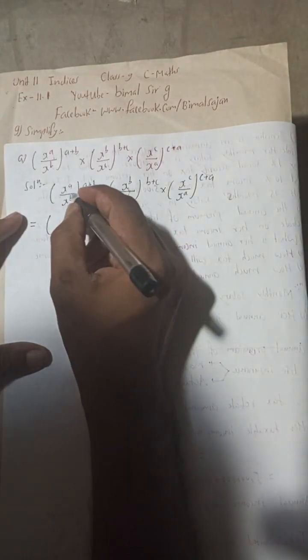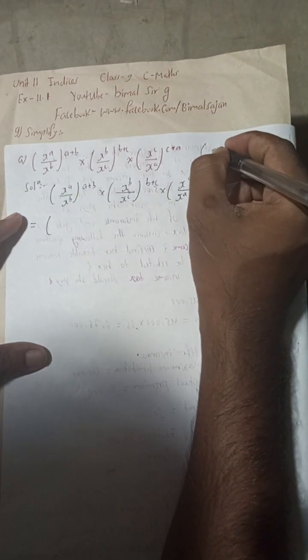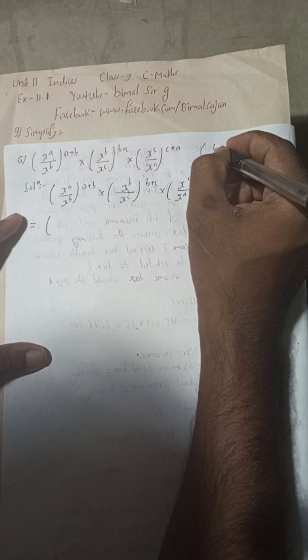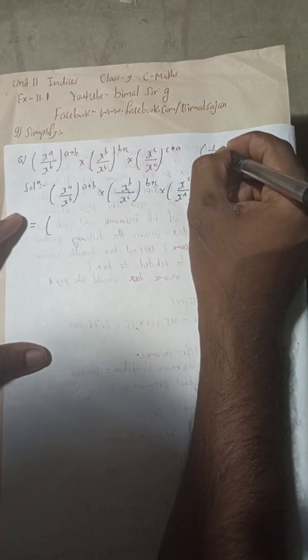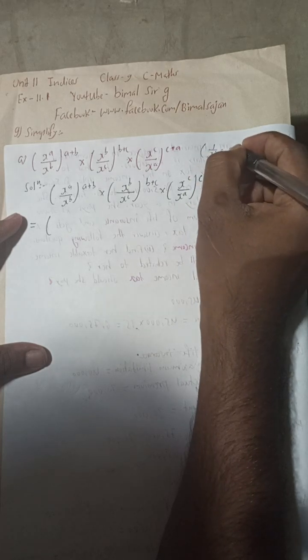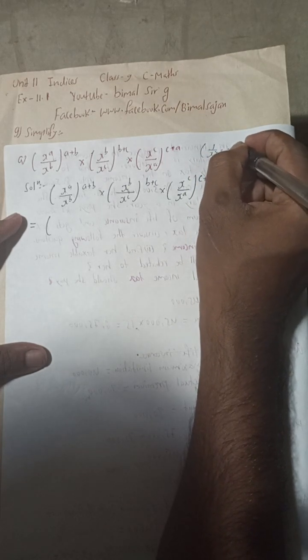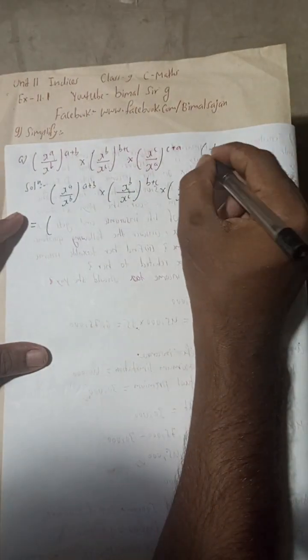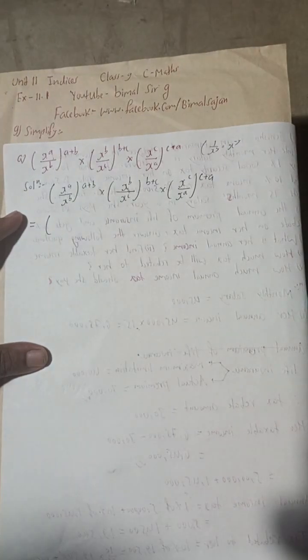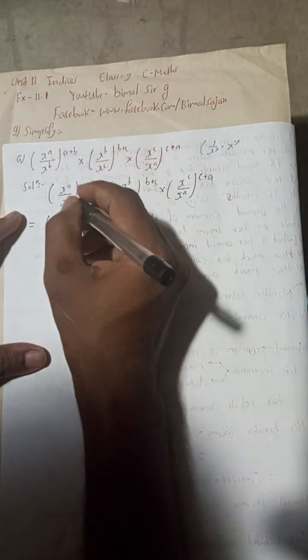The logic behind this: we can write x^a/x^b as x^(a-b). When you have 1/x^y, when it comes to the numerator, it becomes x^(-y). When both are x's being multiplied, we can add the powers.